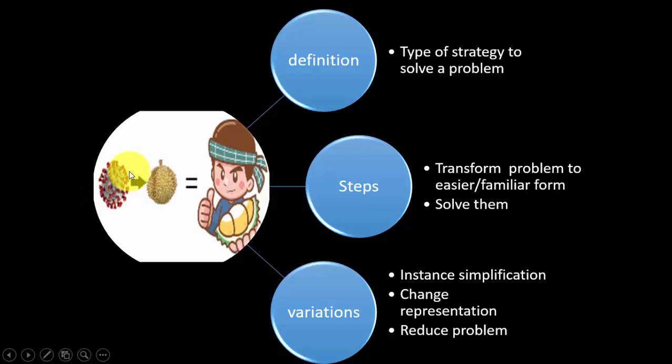We can transform them into another types of instances or familiar shape. This is Durian foods, which is very popular in Asian, and after we change or transform that into a familiar instance, then we can conquer them. Just eat the Durians.